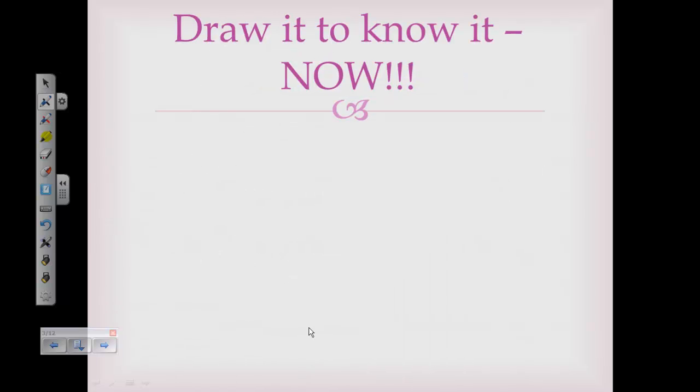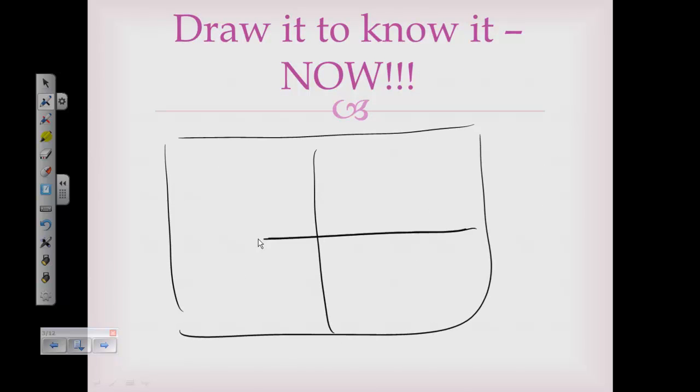A quick way to make sure that you know the heart parts is that you can sit down, and I like to draw it as a square with four boxes in it, and prove to myself that I know it because I can label it up. If you can't do that, then you need to go back and review the heart parts before you go on to the second part of this review session.